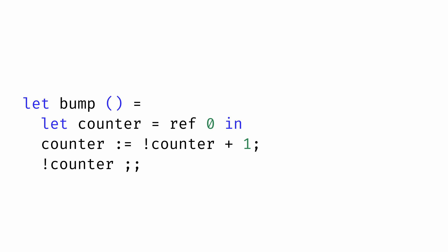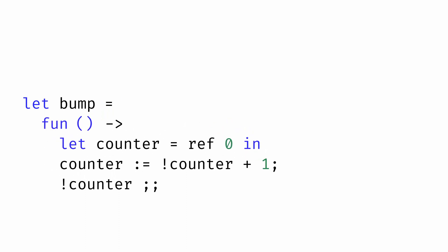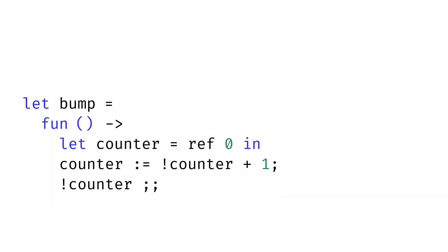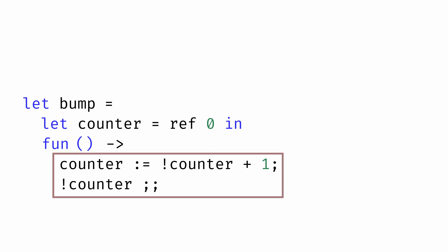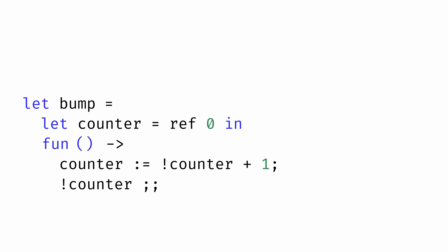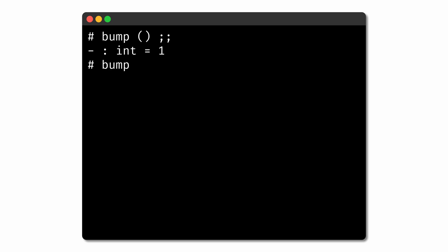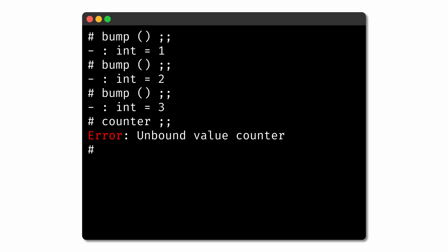It turns out we can fix the problem by using the de-sugared version of our function notation. Remember that the compact notation for functions is really just shorthand for the full notation, where we let the name bump be a function whose input is the unit value and whose output is the expression. This means we can lift the definition of the counter outside the body of the function. Now we define the counter variable outside of the body, and inside the body all that happens is that the counter is incremented and we return the counter's value. The setting of the counter to zero only happens once when we first define bump, not every time the function is called. Now the function behaves as expected — each time we call bump we get an incremented integer, but we no longer have global access to the underlying counter variable.